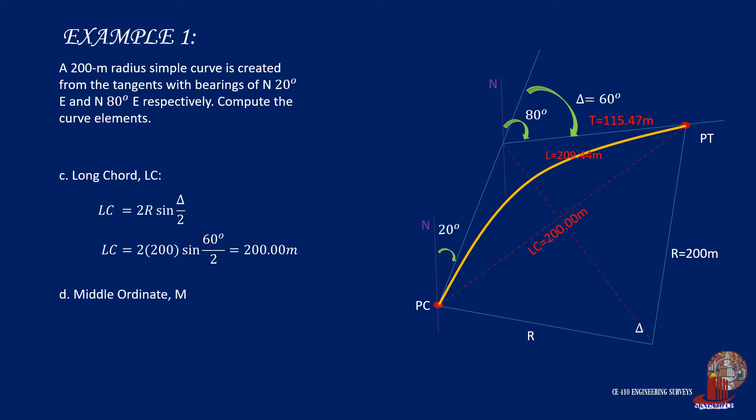Let's solve for the middle ordinate next. M is given as r times the quantity of 1 minus cosine of delta over 2. By placing r and delta, we arrive at M which is equal to 26.79 meters.